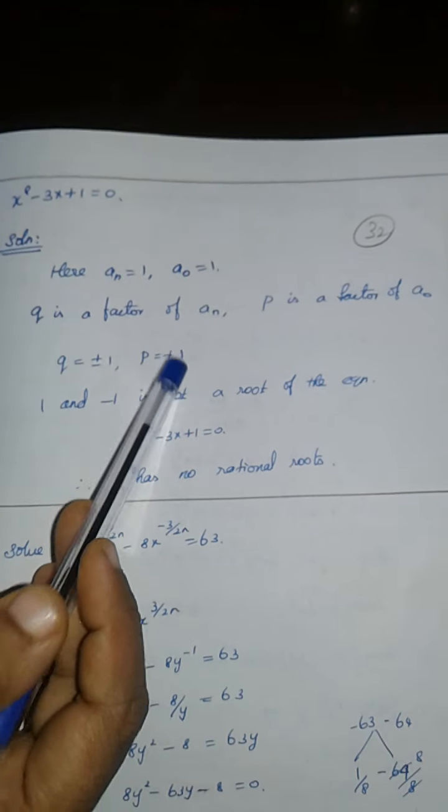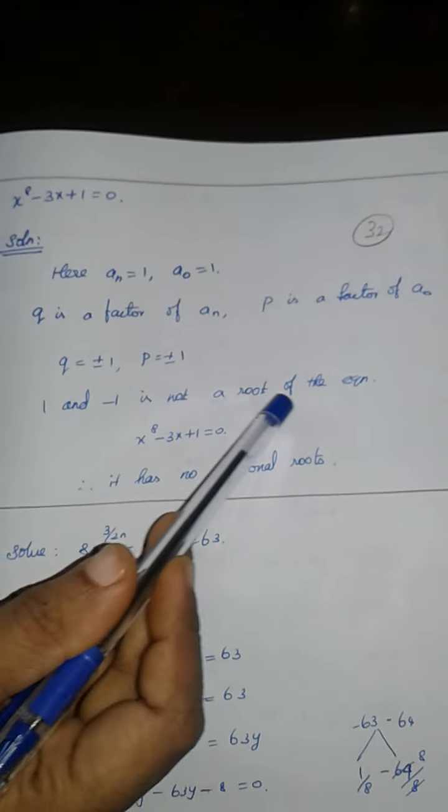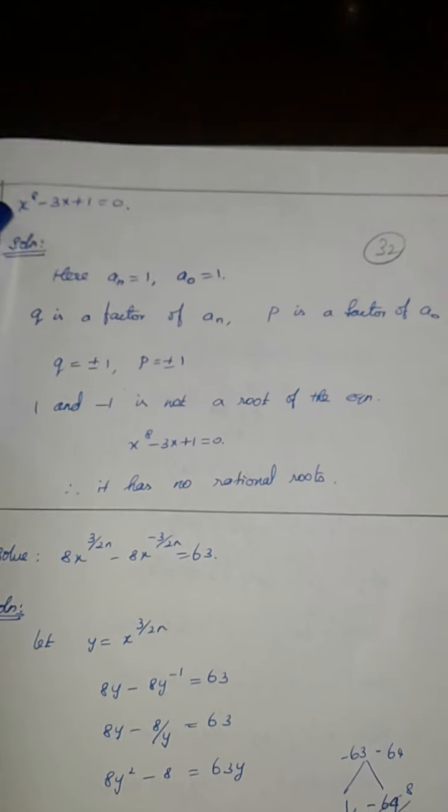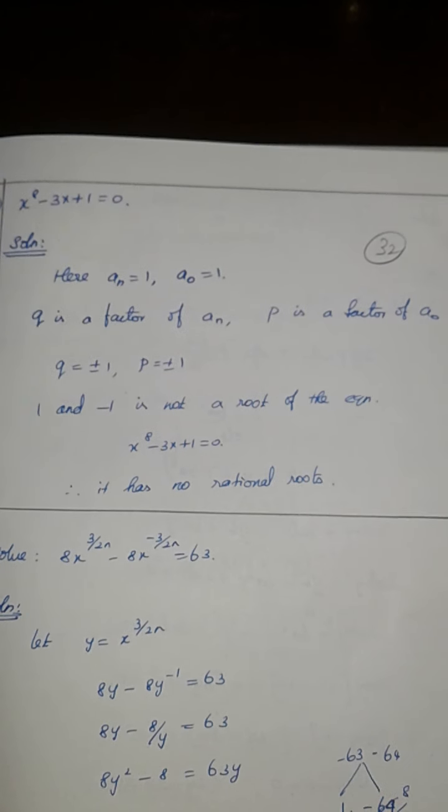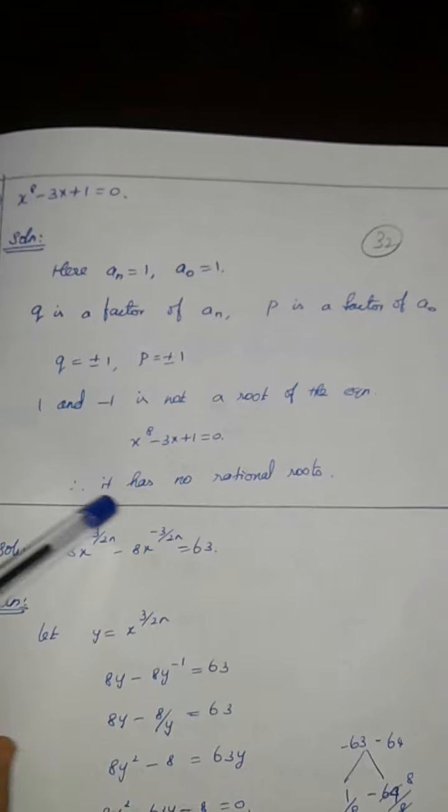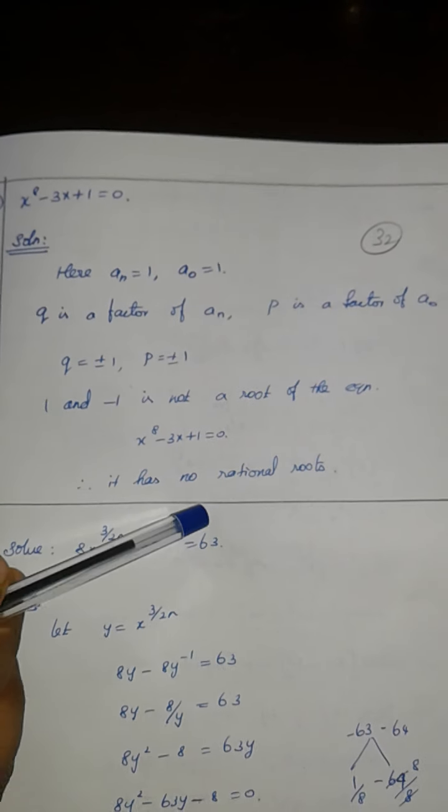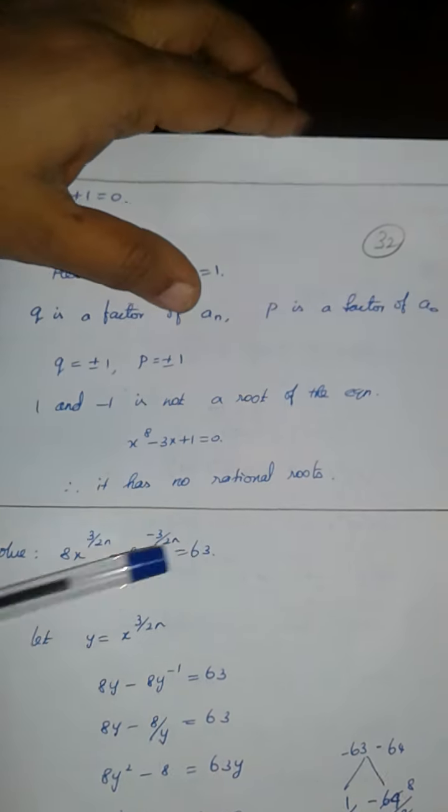Then 1 and minus 1 is not the root of the equation. If 1 is 0 and minus 1 is 0, so this is not a rational root.